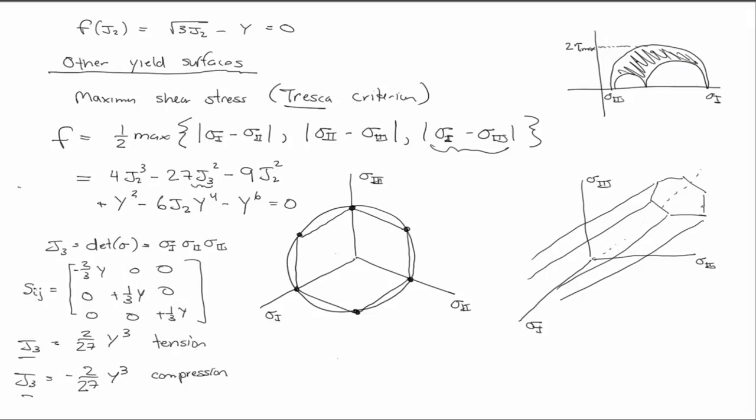If you remember that we have some associated flow rule, or if we use an associated flow rule that says the plastic part of the strain is some multiplier times partial F partial sigma IJ, and we show that that's equal to S IJ.